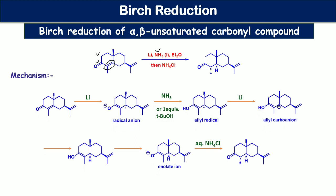Regarding the mechanism, in the first step an electron is added to the molecule and a radical anion is generated, which subsequently abstracts a proton from ammonia or added alcohol to give an allyl radical. After further addition of another electron, the allyl carbanion is formed. In the last step, acidification of this enolate ion with ammonium chloride leads to the saturated carbonyl compound. Notably, in the fourth step the molecule adopts trans-configuration, and in the last step protonation of the enolate ion generates new stereochemistry at the alpha carbon to the carbonyl moiety.